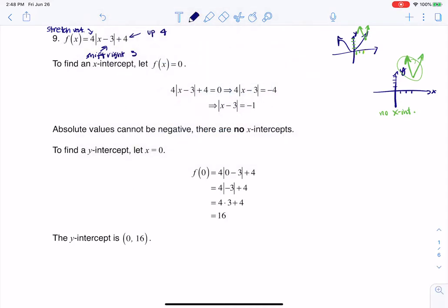Alright, so now that we have the graph side of things behind us, let's do the algebra. So whenever I want to find an x-intercept, I set my function equal to 0. So my function in this case is 4 times the absolute value of x minus 3 plus 4. So I'm going to work through that. If I want 4 times the absolute value of x minus 3 plus 4, if I want to set that equal to 0,